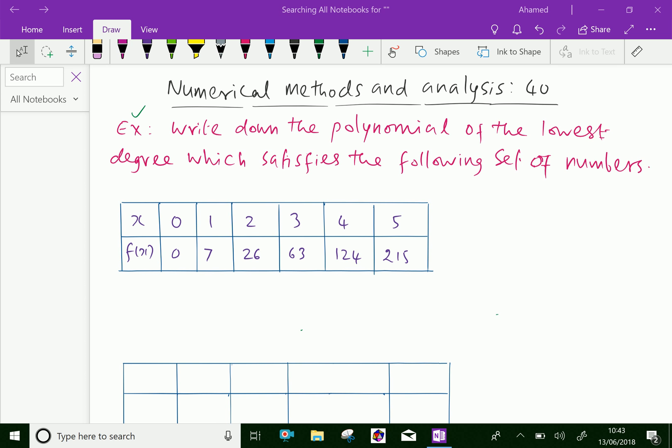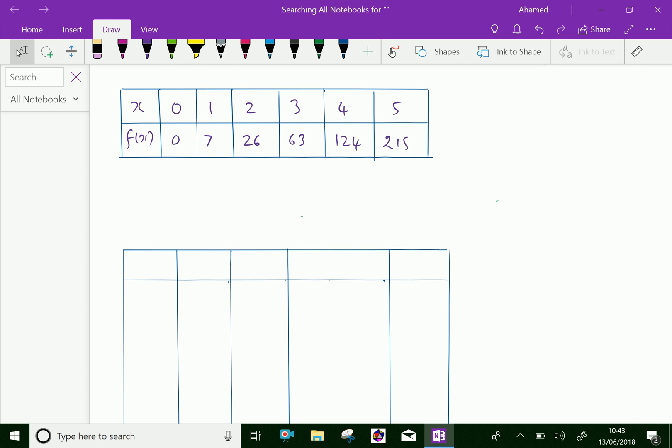Now, by using the formula of factorial polynomial, that is f of x equal f of 0 plus x power 1 delta f of 0 over 1 factorial plus x square over 2 factorial delta square f of 0, and so on.